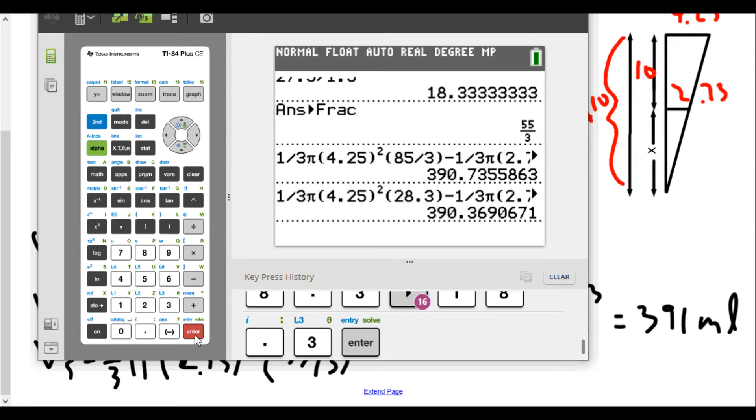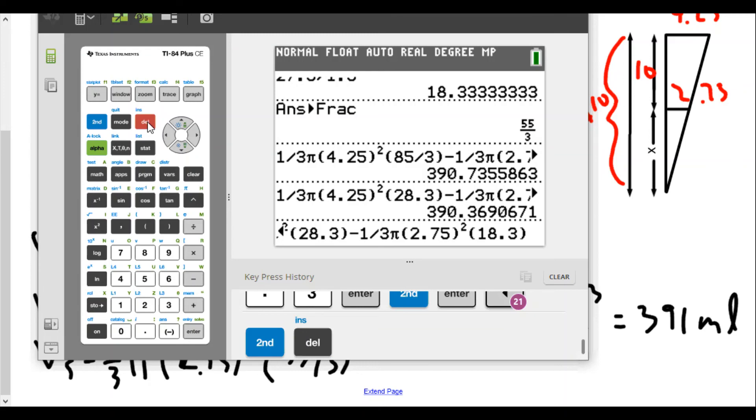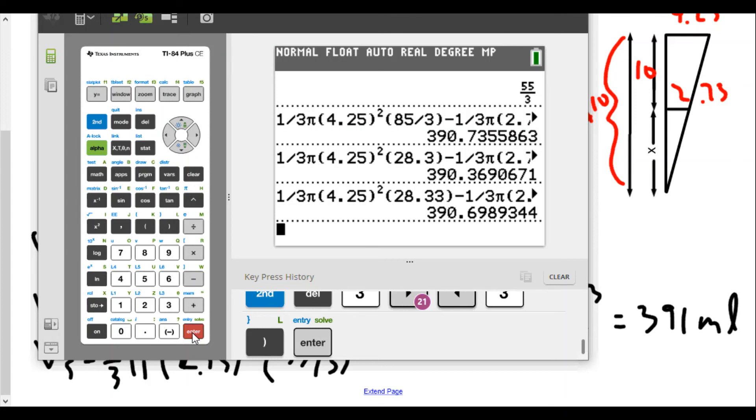Which one is the better answer? Let's try this again. Second entry, go back. Instead of 28.3, what if I wrote 28.33? I can do that by hitting second delete to insert a three. Now let me go to the end and do a three. Enter - now 390.698, which rounds to 391. If we round off too much in the beginning, we'll have an issue. You want to keep some decimal places because of this rounding issue. It will still get 391 milliliters.